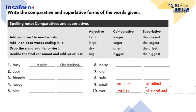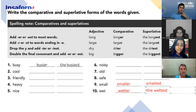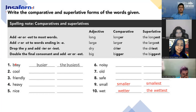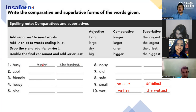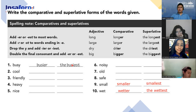Now you are going to make up three sentences. The first using the normal adjective, the second using the comparative, and the third using the superlative. For example: 'I am busy.' Comparative: 'Today I am busier than yesterday.' Superlative: 'November is the busiest month of the year.' Be ready — we're going to start.